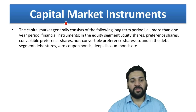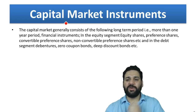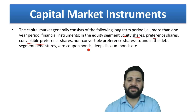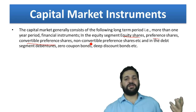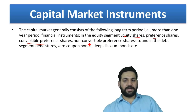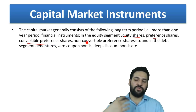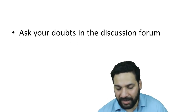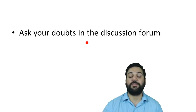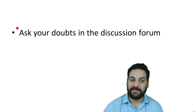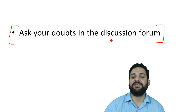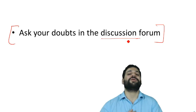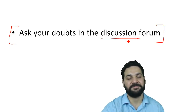Capital market instruments include equity shares, preference shares, and convertible preferences — these are issued for a long period of time. Students can ask their doubts in the discussion forum. That's all for today — thank you and have a very nice day!